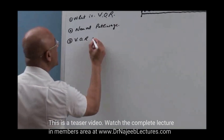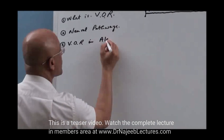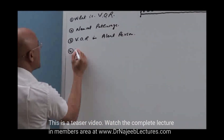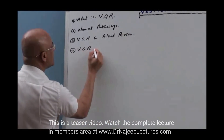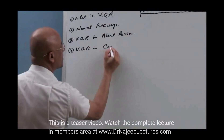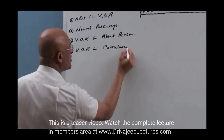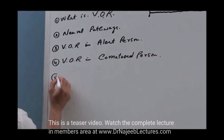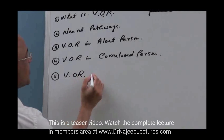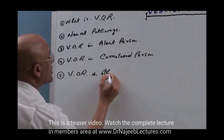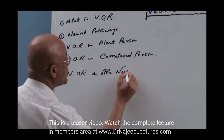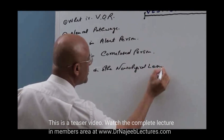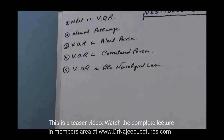We will cover VOR in an alert person, VOR in a comatose person, and VOR in other neurological lesions. So we are going to talk about vestibulo-ocular reflex — first what it is, then the neural pathways controlling this reflex activity.